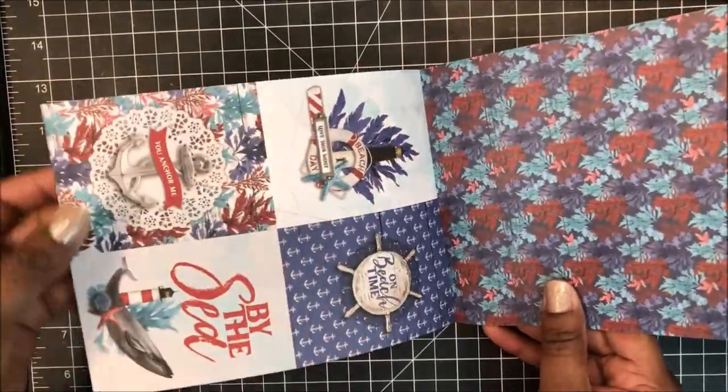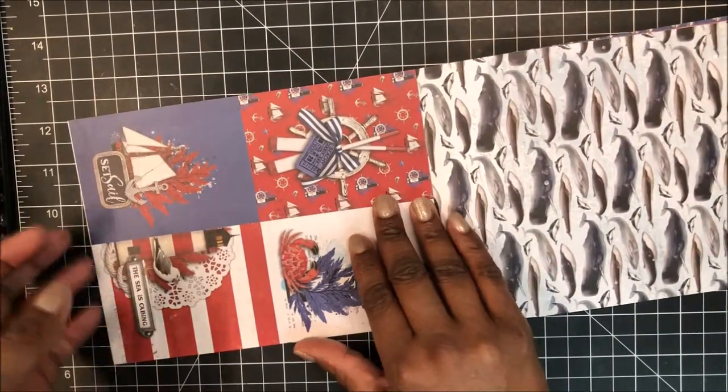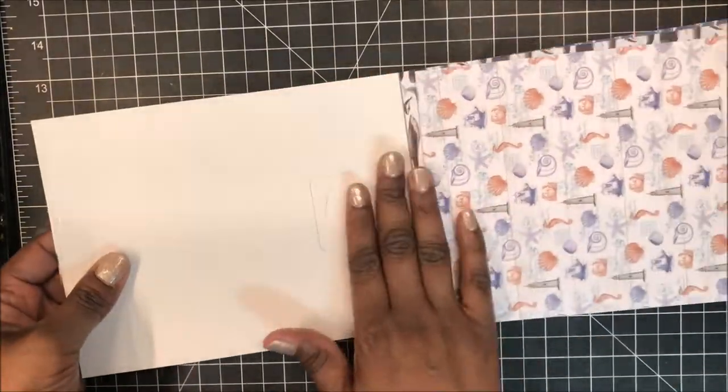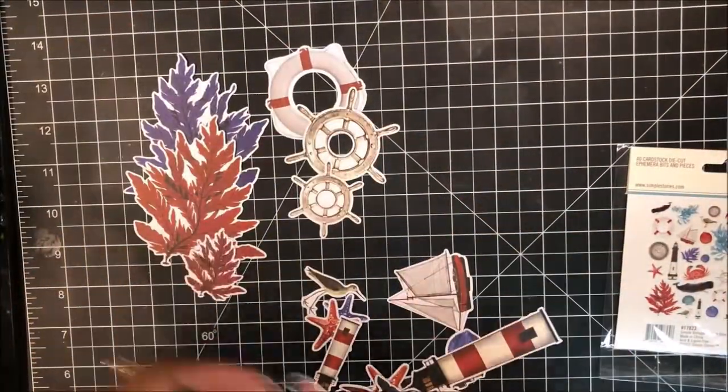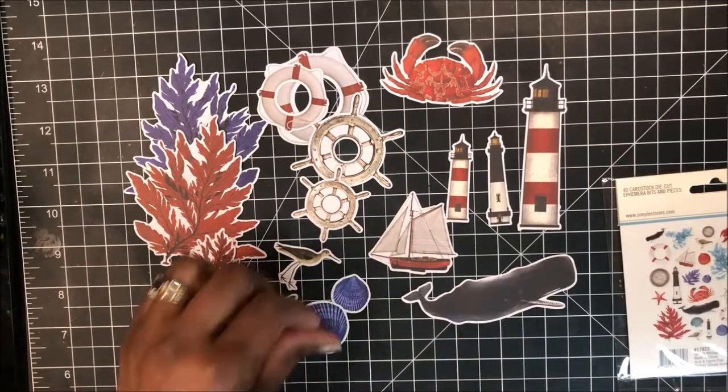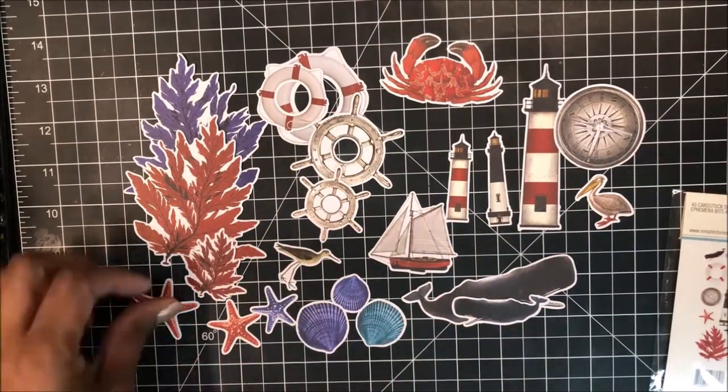Here I'm flipping through the papers. So I also got the nautical bits and there are 40 pieces in this pack and I'm just quickly putting these on the screen so that you can see them.